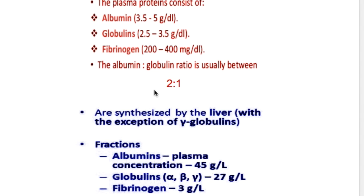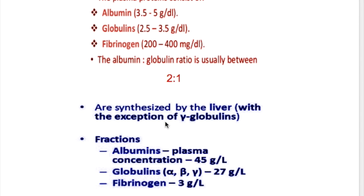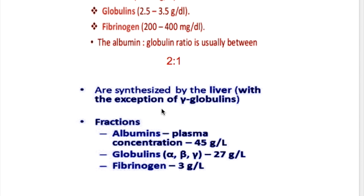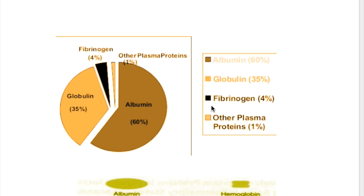The normal albumin-globulin (AG) ratio is 2:1. Which plasma protein is not synthesized in the liver? All plasma proteins are synthesized in the liver except for gamma globulin.